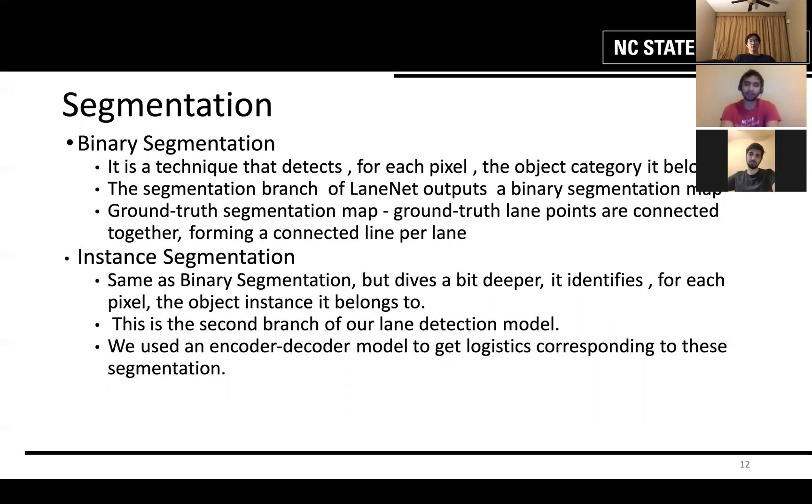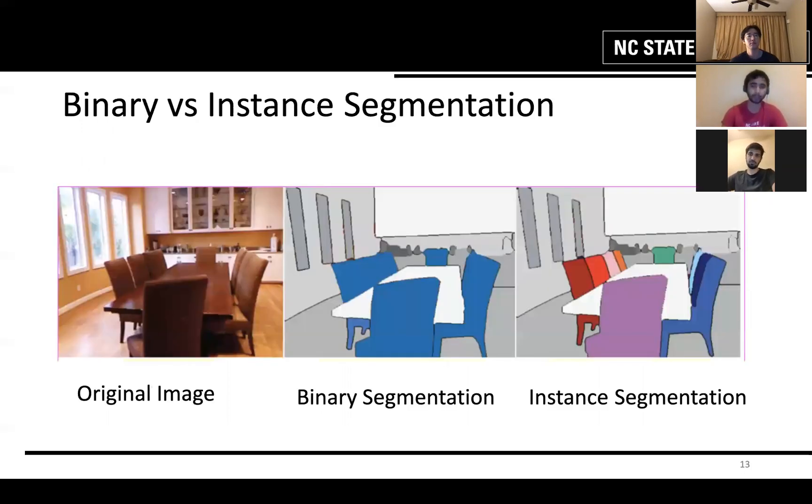The second one is instance segmentation. It is the same as binary segmentation but it dives a bit deeper. It identifies for each pixel the object instance it belongs to. I'm going to explain it further using the following example. You can see this is the original image and using binary segmentation in the second image we are able to identify the difference between a chair and a table. But using instance segmentation we are able to individually identify every chair which we are not able to do using binary segmentation.